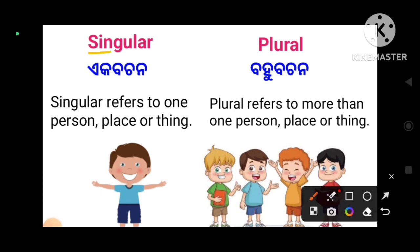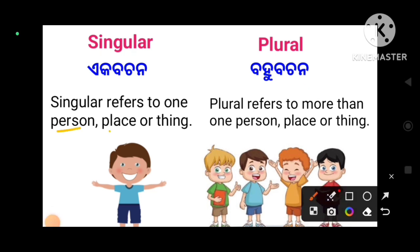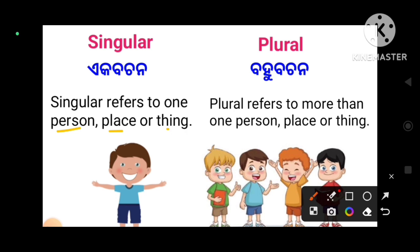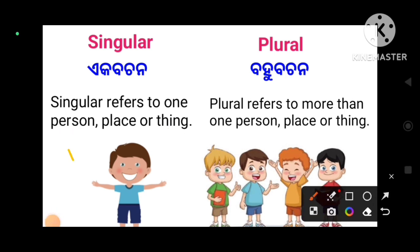Singular refers to one person, place, or thing. Plural refers to more than one person, place, or thing. The first picture shows one, and another picture shows more than one person, place, or thing.